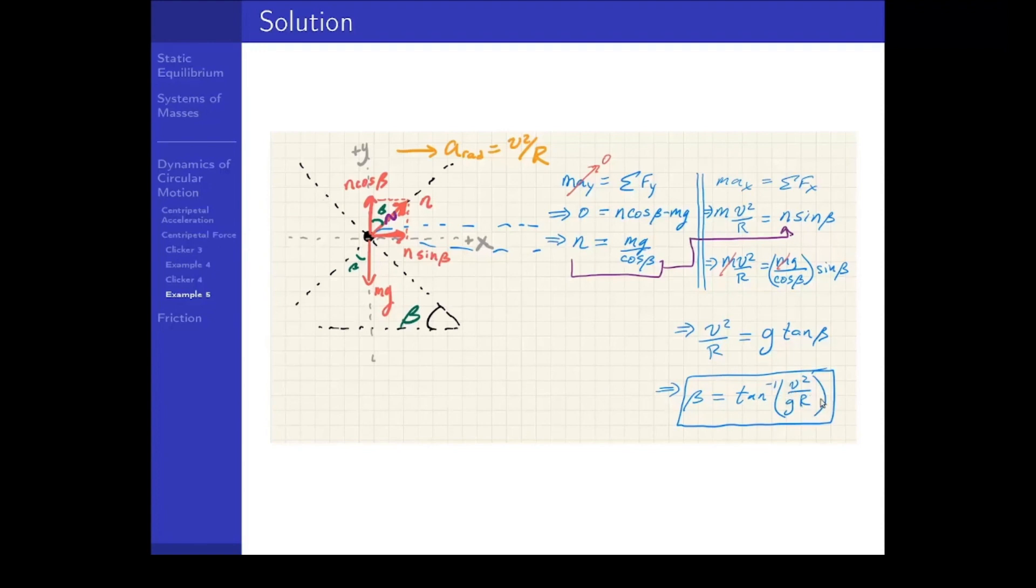Likewise, the smaller the radius, the larger the angle you should use. Because a small radius path requires a very large angle so that you don't slip. That's why when people do donuts or are drifting with their car, it's hard for the car to keep track of the ground.